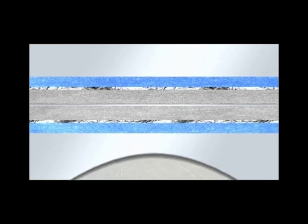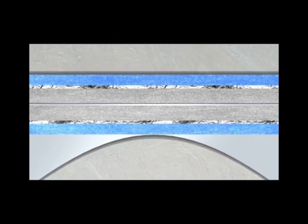Sonotrode and anvil are finely adjusted to a tolerance of microns and ensure precise compression. Due to the surface friction, energy is generated between the foils.